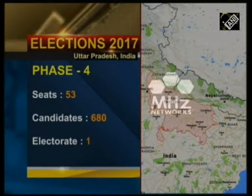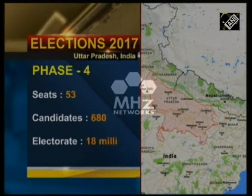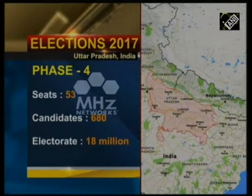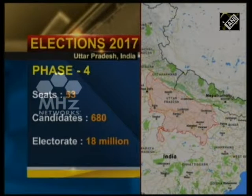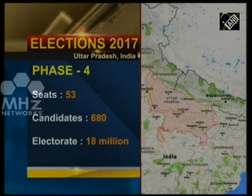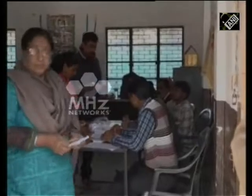The Samajwadi Party and Congress Alliance, the Bharatiya Janata Party, and the Bahujan Samaj Party are the key players in the election. Corruption and development remain the main issues on the minds of voters.